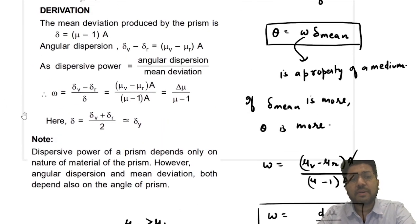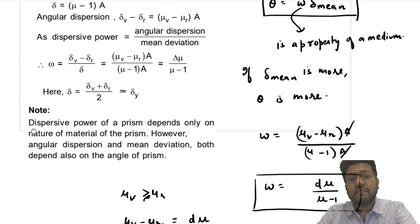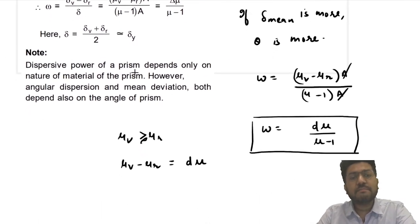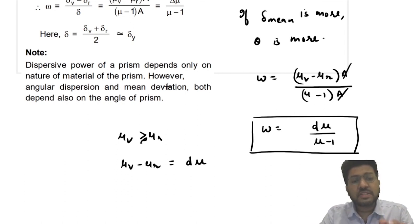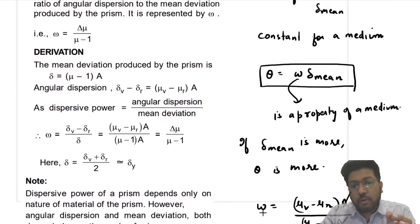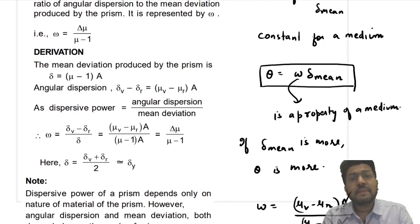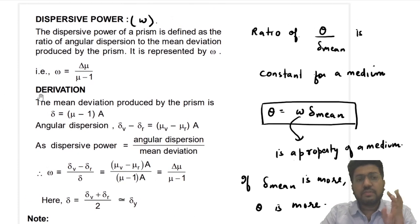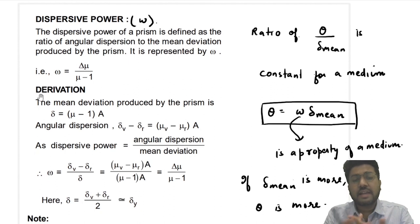Dispersive power is a constant for a given medium. Note: dispersive power of a prism depends only on the nature of the material of the prism. However, angular dispersion and mean deviation both depend also on the angle of the prism. Omega is θ/δ_mean. θ depends on the angle of prism, δ_mean depends on the angle of prism, but ω does not depend on the angle of prism — it depends only on the material. So we have now discussed three definitions: angular dispersion, mean deviation, and dispersive power. ω is constant for a material and θ = ω·δ_mean.